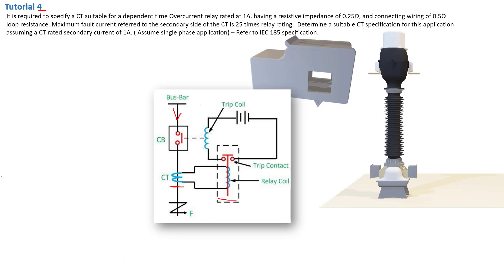The 1 amp of current will then energize the coil of our overcurrent relay, and that coil will trip the trip contact. That will then complete the circuit for the DC power supply, and that current will flow into a coil which will be energized. As a result, it will pull another trip contact, releasing the circuit breaker and isolating the part of the circuit that is in trouble, hopefully isolating the fault in time to save our equipment and the personnel that may have been exposed to the fault.